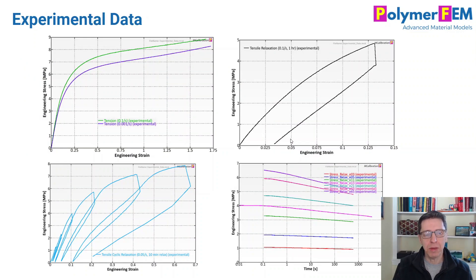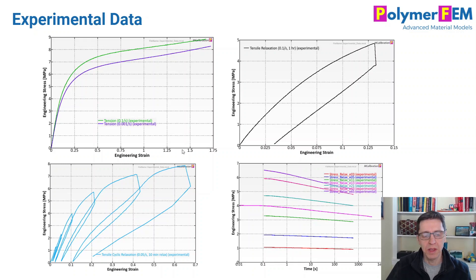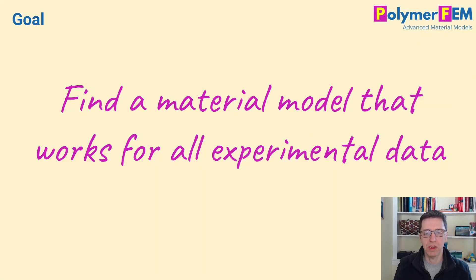I will talk about experimental data shown on the screen here. I performed four types of experiments: uniaxial tension at two different strain rates, very slow and intermediate; a uniaxial tension with a one-hour stress relaxation segment at about 10% strain; and a cyclic test where I increased the strain gradually and held it constant for 10 minutes at six different levels. The goal is to find a material model that can capture all of this experimental data and not cause problems in finite element simulations.